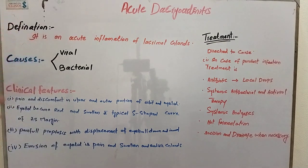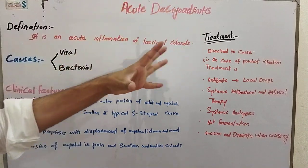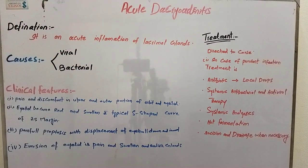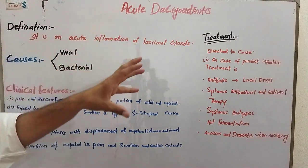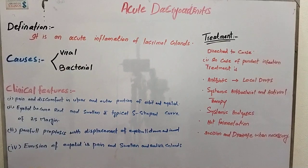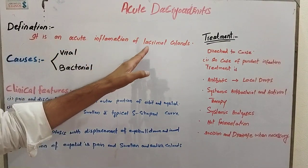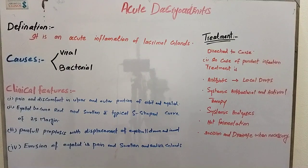Assalamualaikum students. Today our topic of discussion is acute dacryoadenitis. We will discuss four points: definition, causes, clinical features, and treatment. The definition: it is an acute inflammation of the lacrimal glands. There are two types of causes — it may be viral or it may be bacterial.